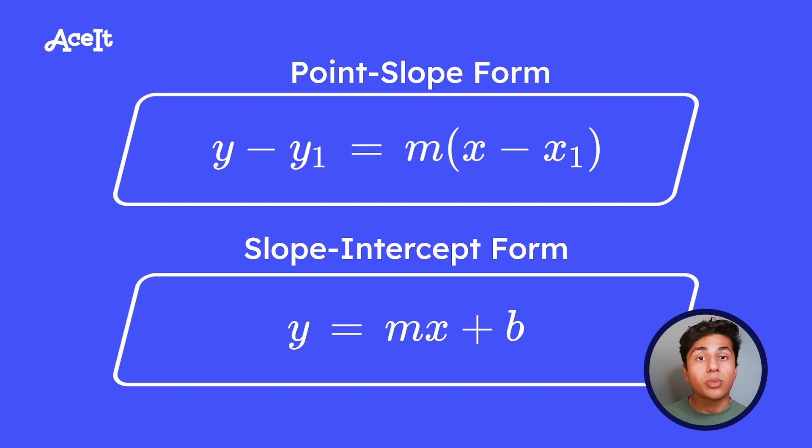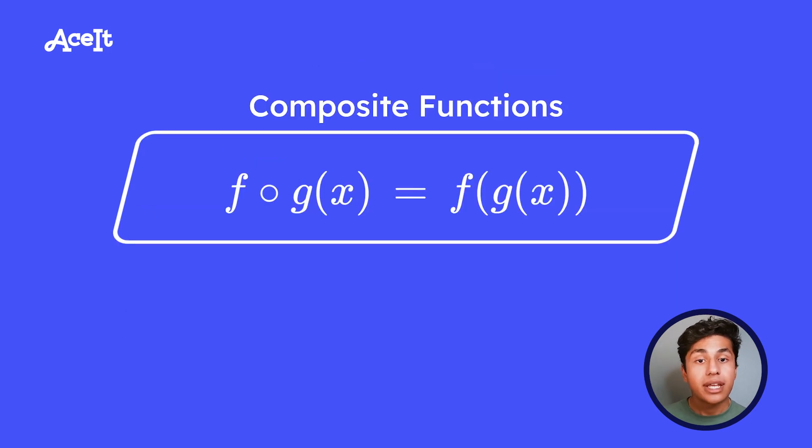There also exists what's known as a composite function, and this is where you take the results of one function and you apply it to a different one. And the notation is this circle symbol you see, and this would read out f of g of x.